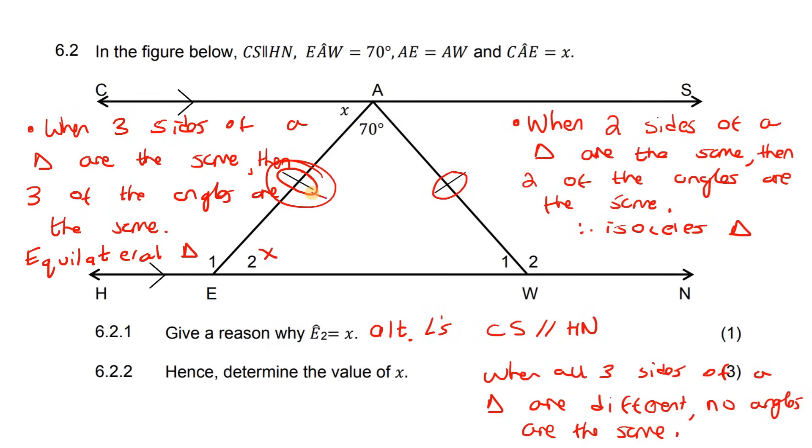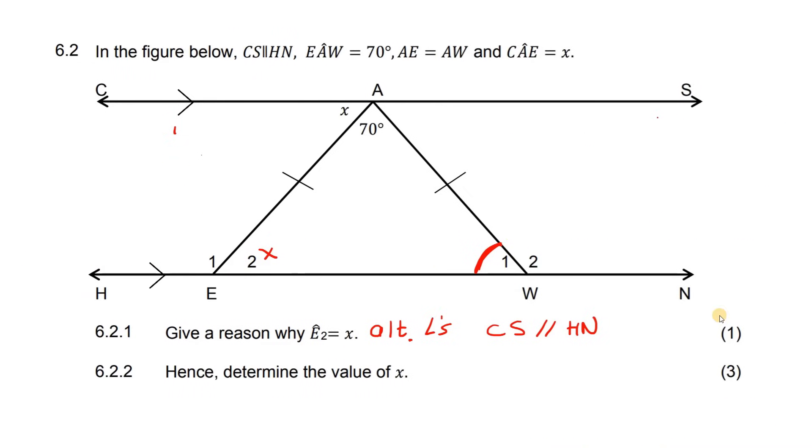Opposite this side is that angle over there, which is W1. And opposite this side is this one over here, which is E2. So we can say that these two angles are the same.